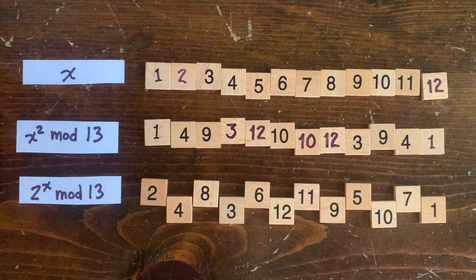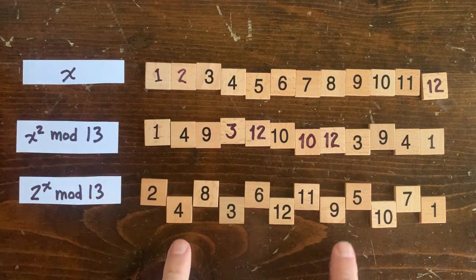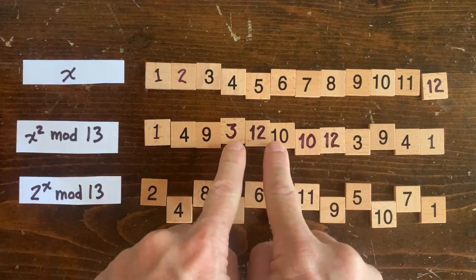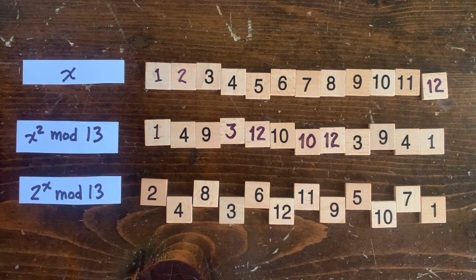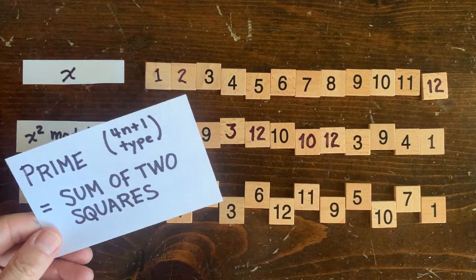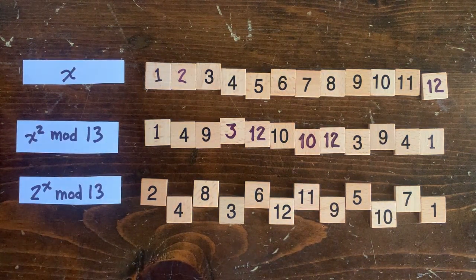And not only that, but these squares come in pairs six apart. So 4 plus 9 is 13, 3 plus 10 is 13, and 12 plus 1 is 13. That means we can express the prime 13 as a sum of two squares, which is Fermat's theorem, and we can do it in three different ways.